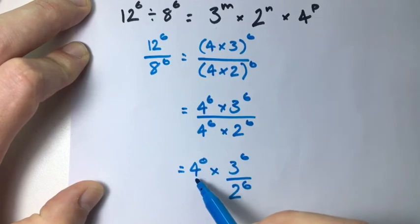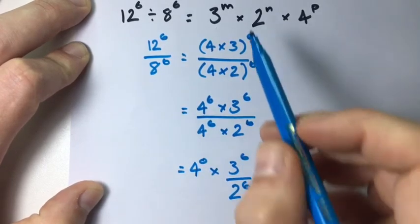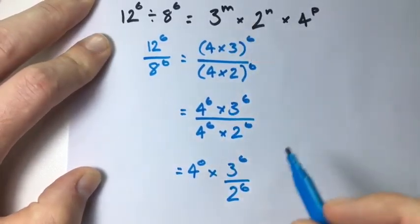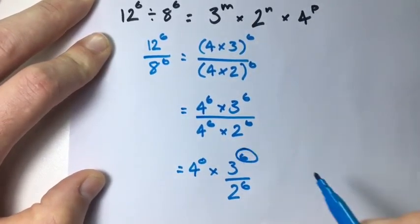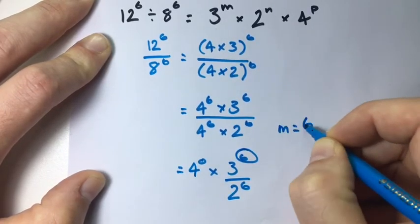So we have our base of 4, our base of 3, and our base of 2, and we have our exponents. They want m, so the base of 3 here. What is my exponent? 6. So m equals 6.